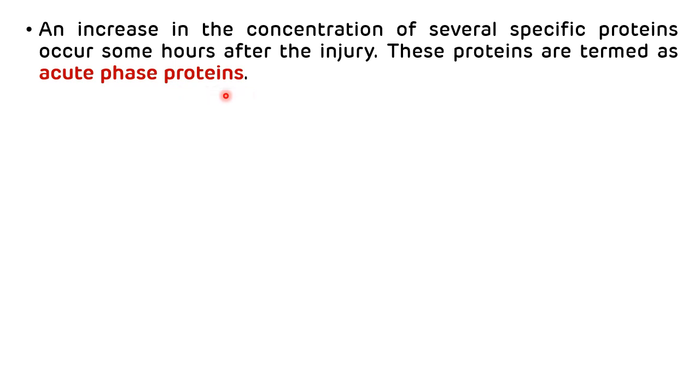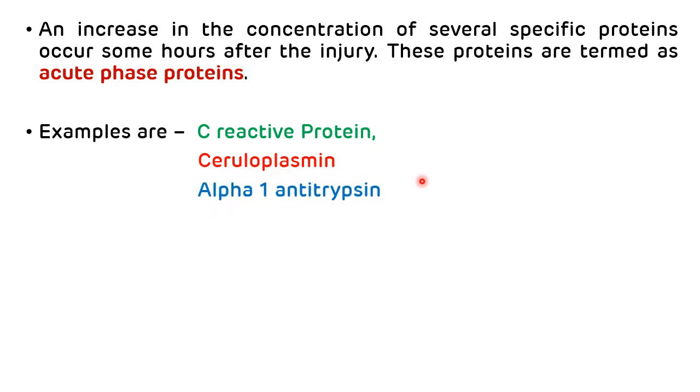The examples of acute phase proteins are, first one is C-reactive protein that we will see in detail in the next slide. Second one is ceruloplasmin. It is an important transport protein for the copper ion. Third one is alpha-1-antitrypsin. It is a protease inhibitor. And if there is any deficiency of alpha-1-antitrypsin, then it leads to emphysema.